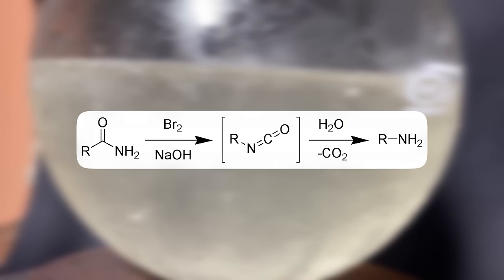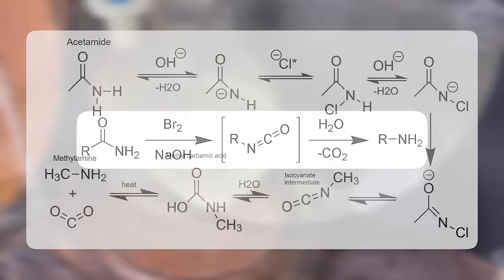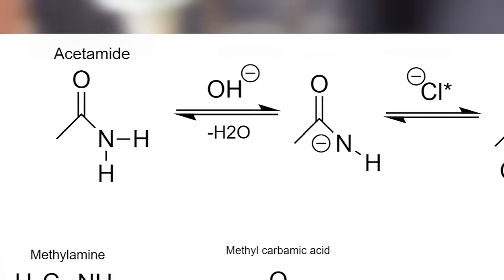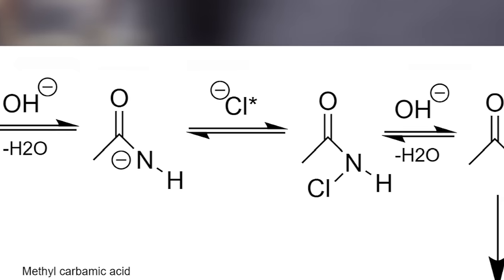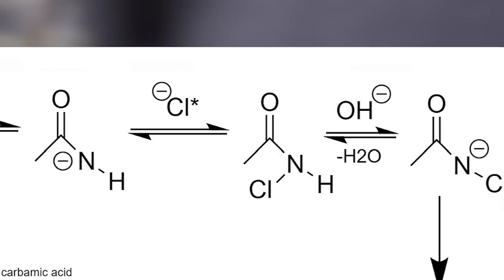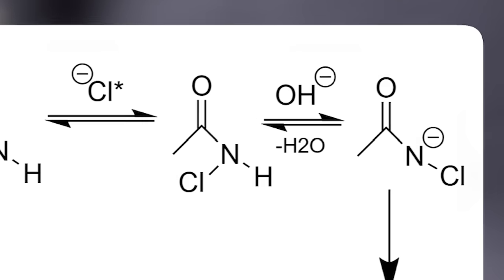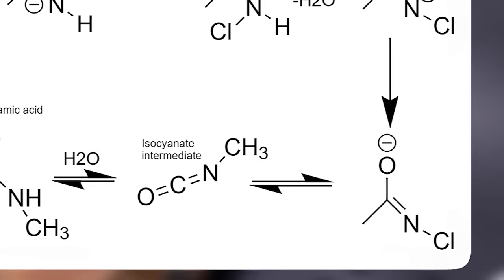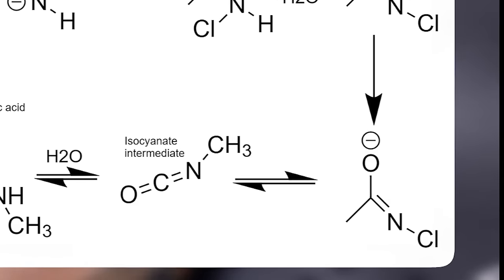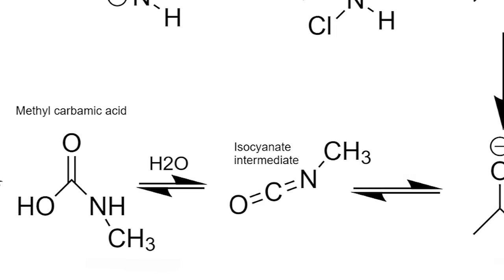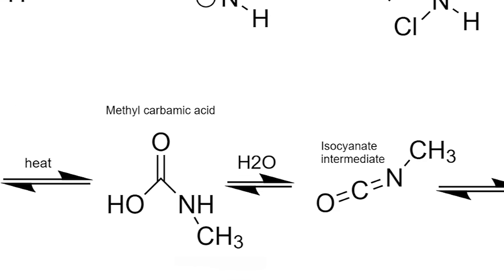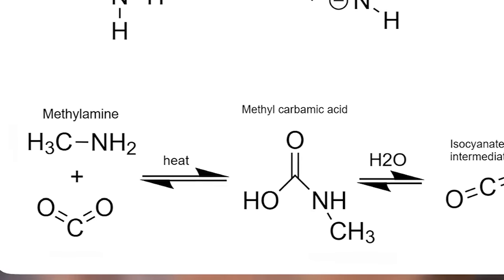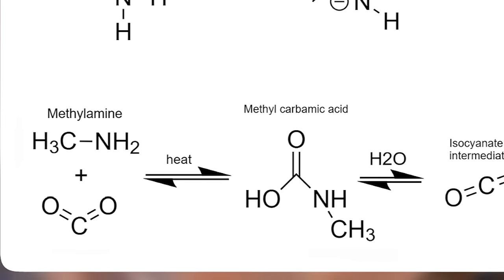Basically, the Hoffman rearrangement is a reaction where you can convert a primary amide into a primary amine. First, the hydroxide group from the sodium hydroxide takes away a proton of the acetamide, leaving the nitrogen with an extra electron. Then a chlorine radical - a single chlorine atom from the calcium hypochlorite - connects to the nitrogen to take its extra electron. Then a new double bond is formed between the carbon and the nitrogen, and chlorine detaches into the solution. An isocyanate intermediate is then formed, which reacts with a water molecule to form methylcarbamic acid.